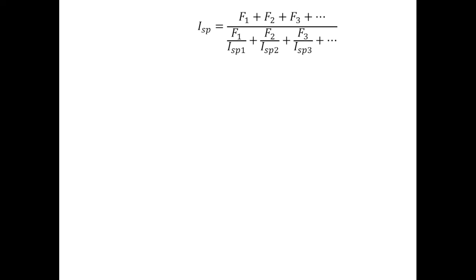I presented this formula for calculating the combined effective ISP of multiple engines, where F1, F2, etc. are the individual engine thrusts, and ISP1, ISP2, etc. are the individual engine-specific impulses. I provided this formula without any proof. I did this because I didn't want to get sidetracked away from the main topic of the video.